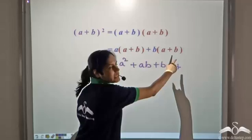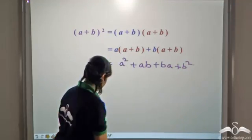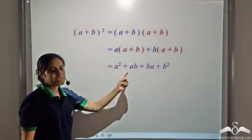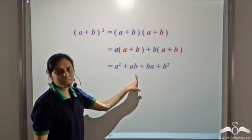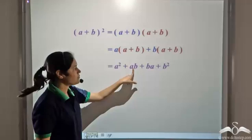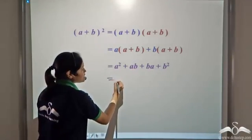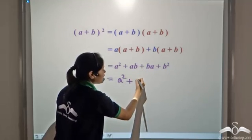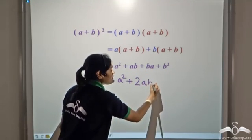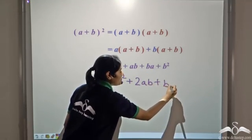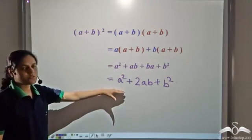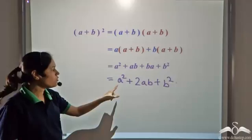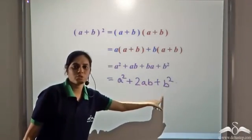And b into b as b square. We can further simplify it by combining the like terms. ab and ba are like terms. So we can write it as a square plus ab plus ba, which is 2ab, plus b square. So a plus b whole square is equal to a square plus 2ab plus b square.